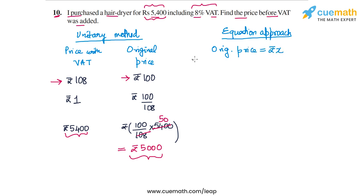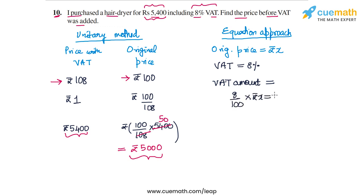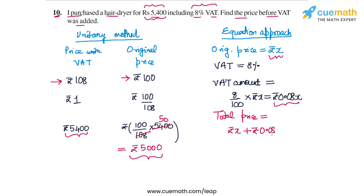We have a VAT of 8% on rupees x. So VAT percentage is 8%, which means the VAT amount on rupees x will be equal to 8% of rupees x, or 8 by 100 into x, which is equal to 0.08x. This means that the total price of the hairdryer will be the original price rupees x plus this VAT of rupees 0.08x, written as x plus 0.08x, which is equal to rupees 1.08x.